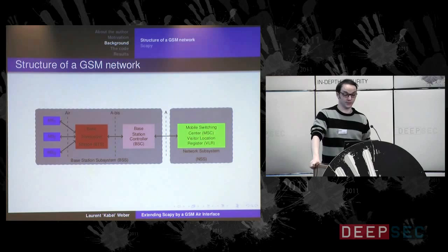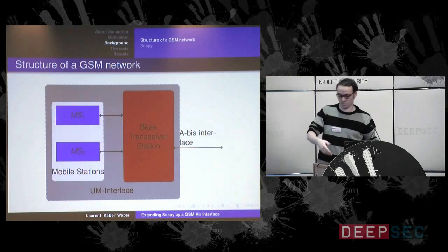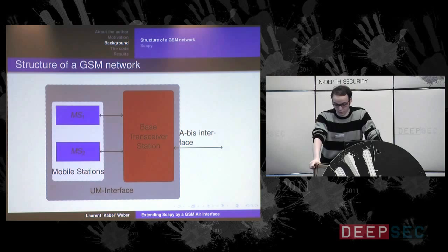Of course it's not a complete overview — it's only to introduce it to people that have never seen anything about GSM. All you have to know is the mobile stations, or in our case the phones here, and the base transceiver station which will be played by my USRP. In reality that would be the antenna of an operator. The A-bis interface stuff you can already forget — that's not interesting for what I'm going to present.